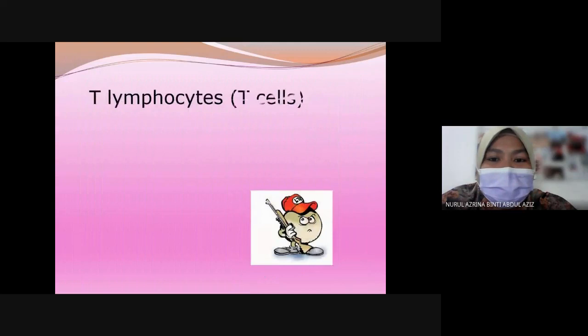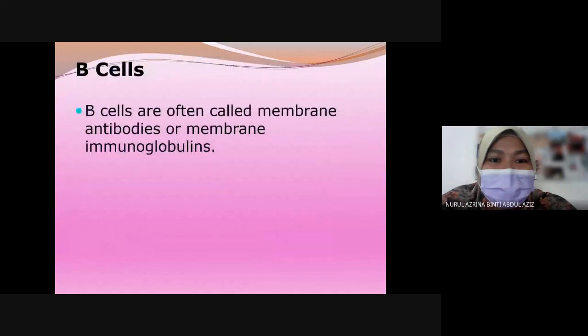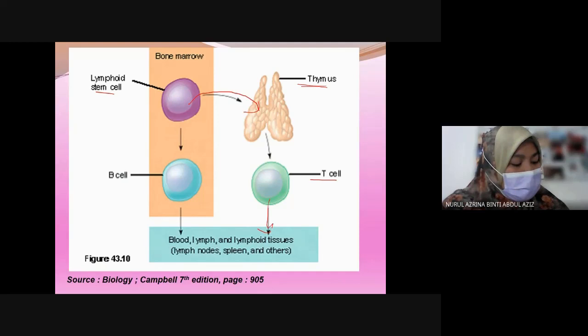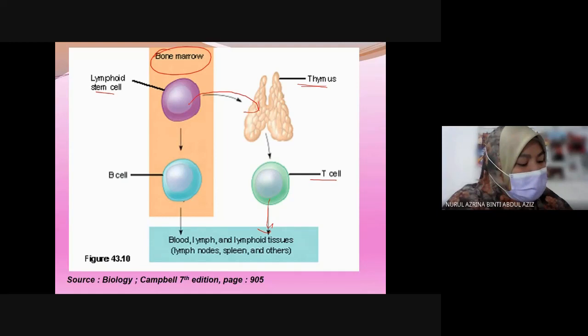From bone marrow, some cells migrate into the thymus gland and mature there — these become T cells. Some cells complete maturation in the bone marrow and remain as B cells. T cells later migrate into lymph nodes and other organs to defend the body. B cells complete their maturation inside the bone marrow before migrating to other parts of the body.